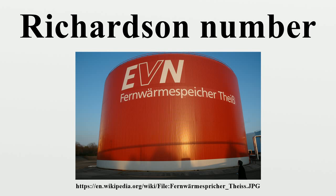The energy of the flow derives from the potential energy in the system originally. In aviation, the Richardson number is used as a rough measure of expected air turbulence. A lower value indicates a higher degree of turbulence. Values in the range 10 to 0.1 are typical, with values below unity indicating significant turbulence.